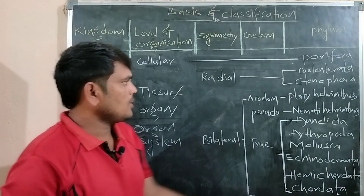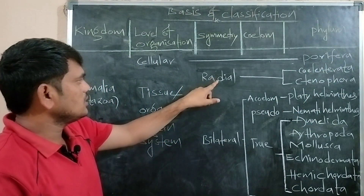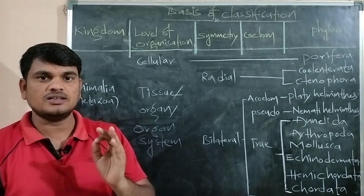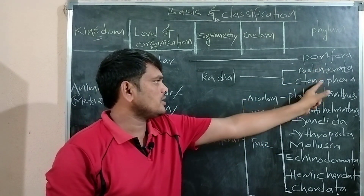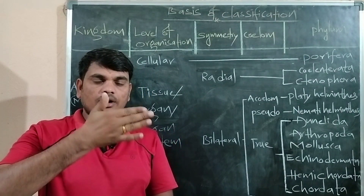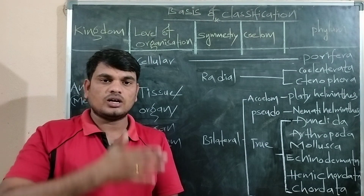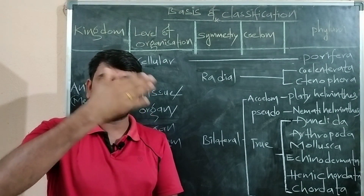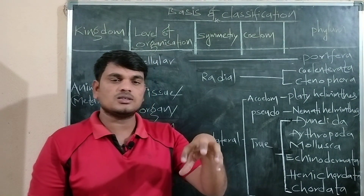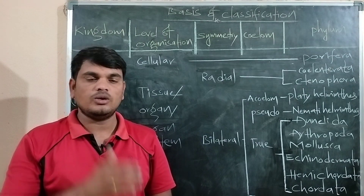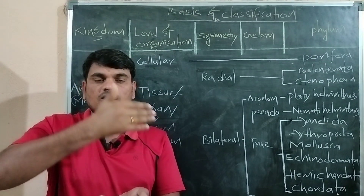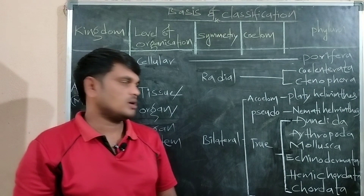Now, Coelenterata and Ctenophora exhibit radial symmetry. Symmetry means the systematic arrangement of organs in the body. Radial symmetry: when you cut the body of Hydra, many planes can cut the body into two equal parts. Organs are arranged in a circular manner — any plane through a central axis divides the organism into two equal parts. That is radial symmetry.